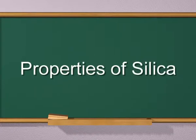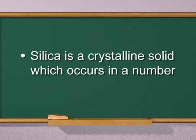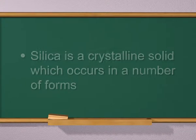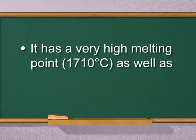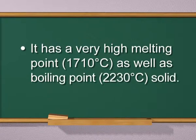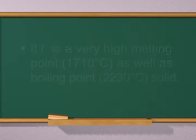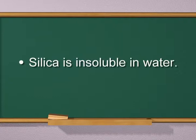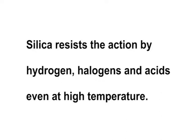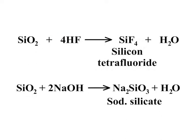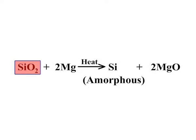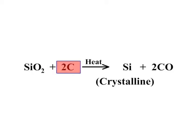Silica is a crystalline solid which occurs in a number of forms. It has a very high melting point of about 1710 degrees Celsius and boiling point of 2230 degrees Celsius. Silica is insoluble in water and resists the action of hydrogen, halogens and acids even at high temperature. However, it is attacked by hydrogen fluoride and sodium hydroxide. When silica is heated with magnesium, an amorphous variety of silicon is formed. Upon heating quartz with carbon in an electric furnace, a crystalline variety of silicon is formed.